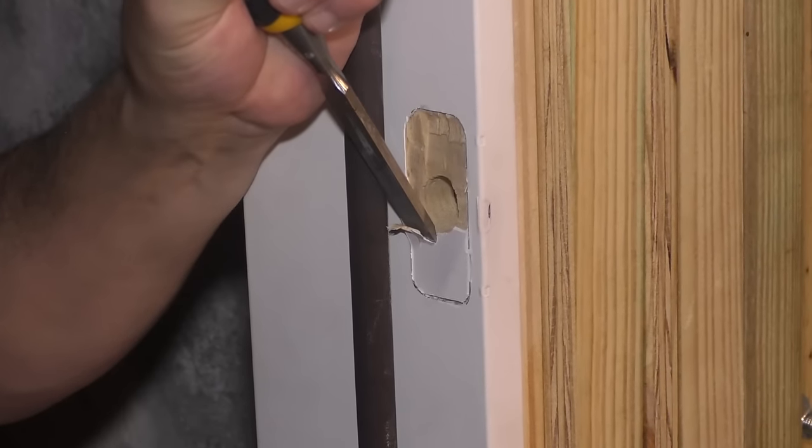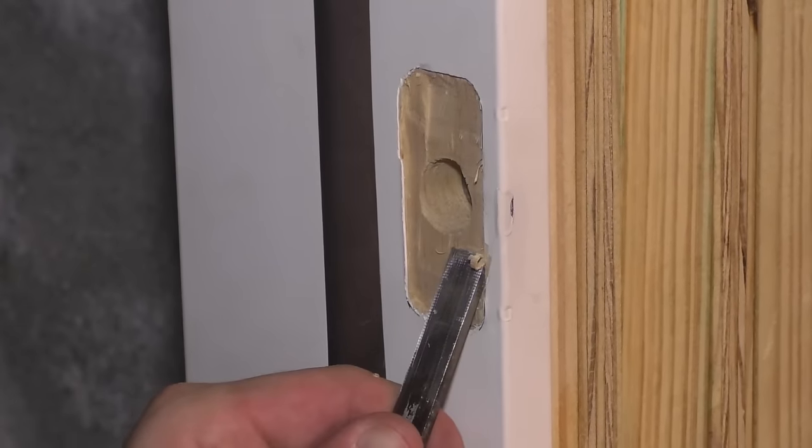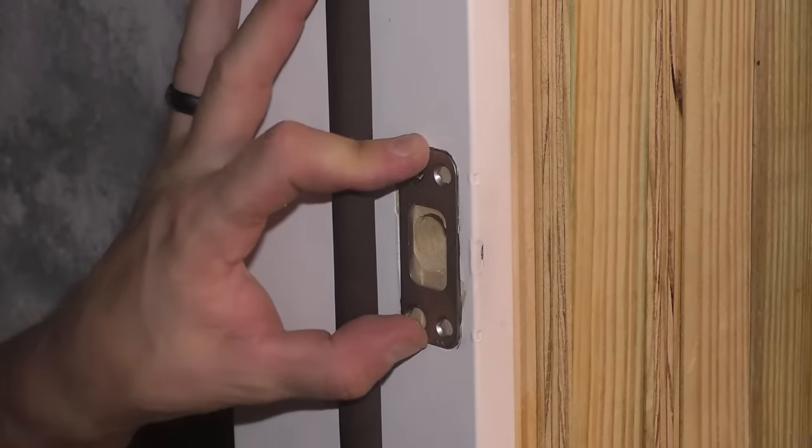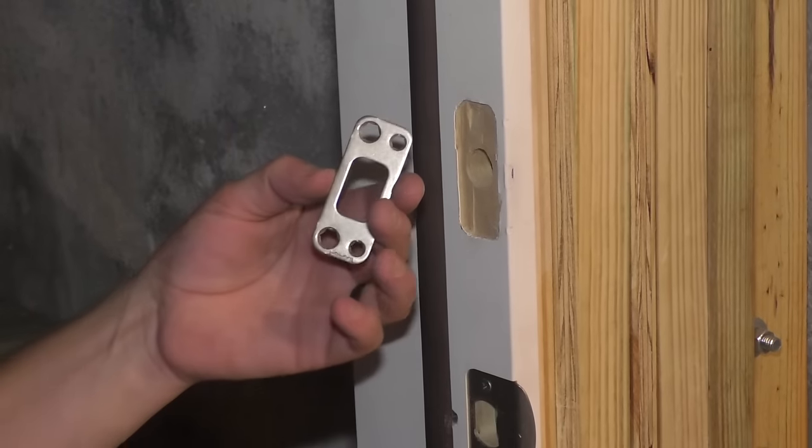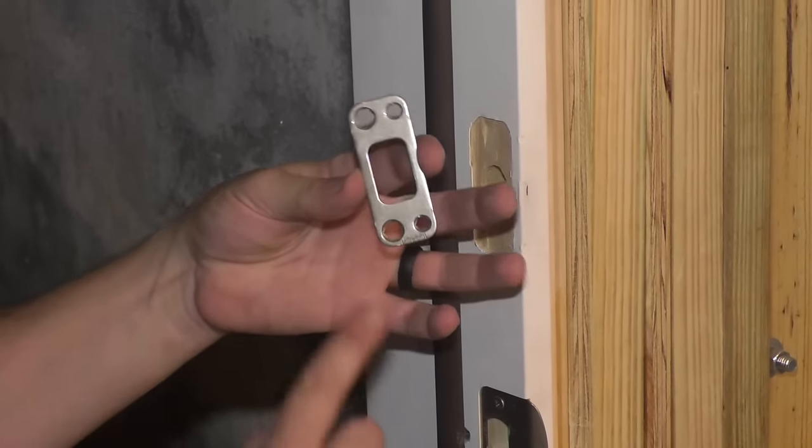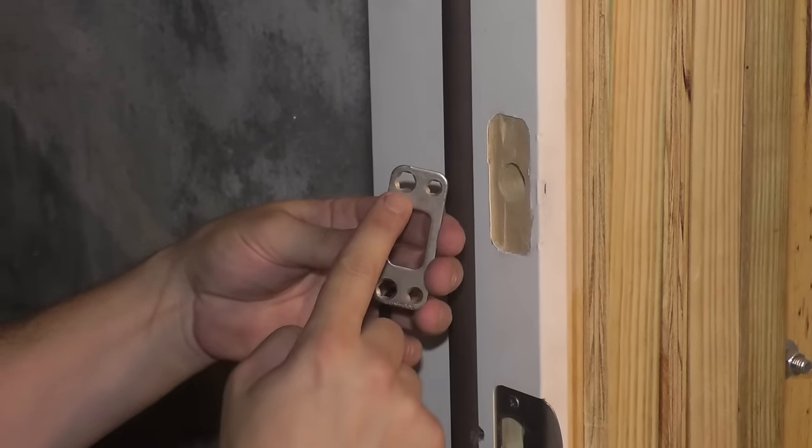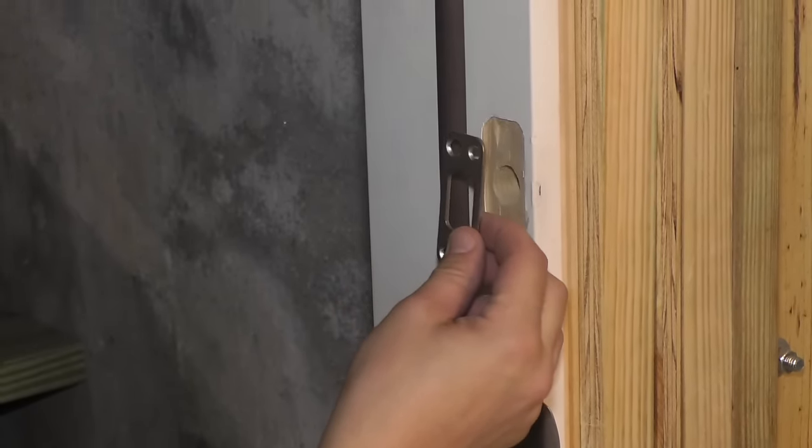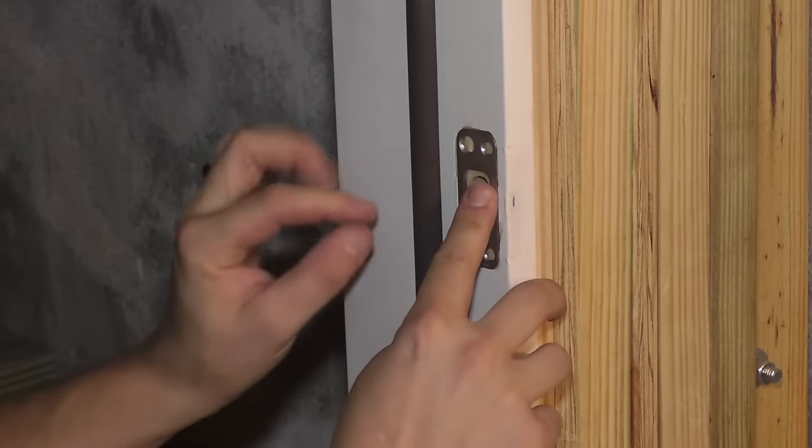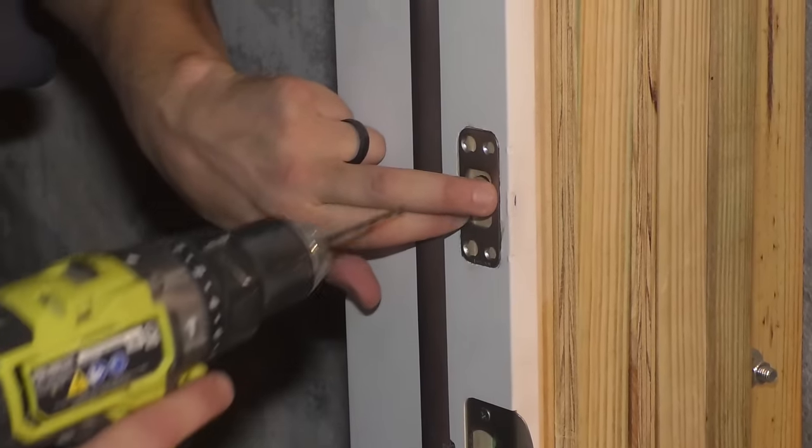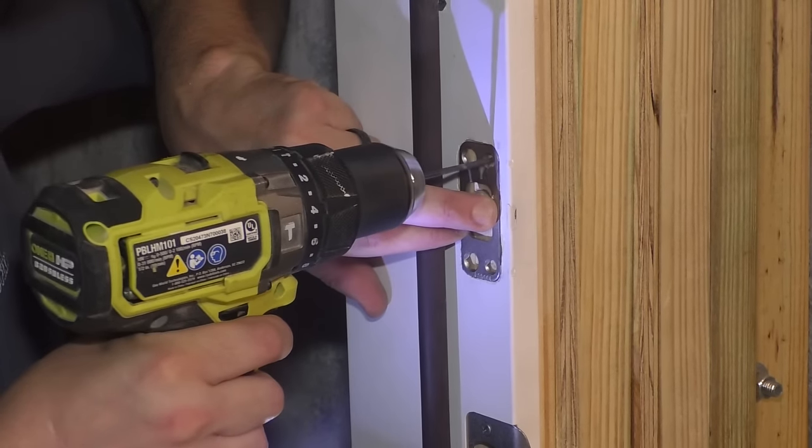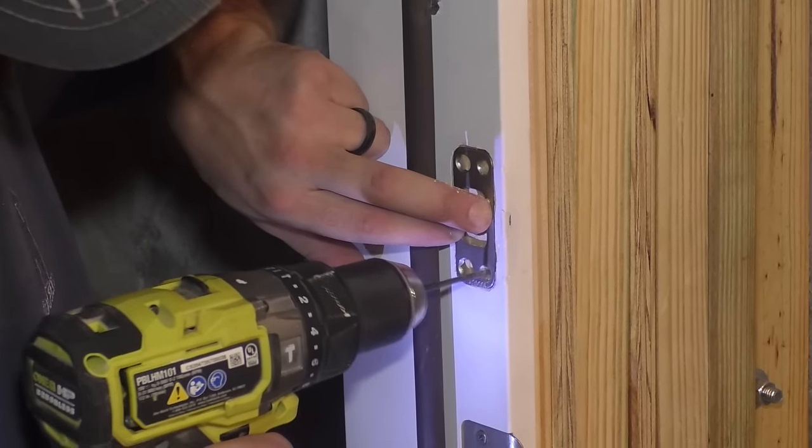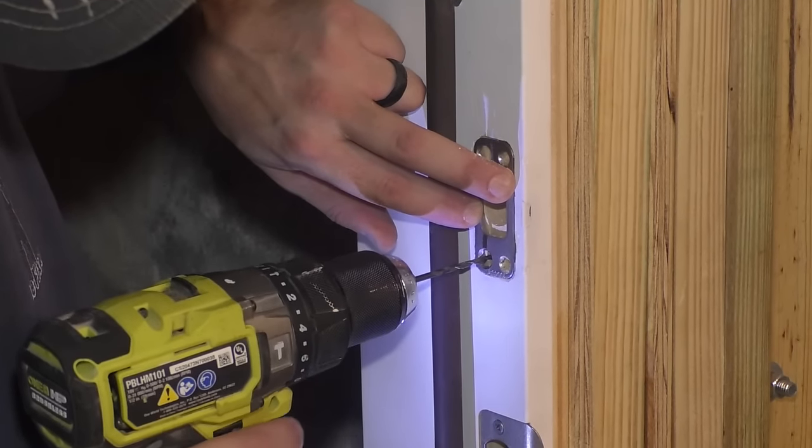I think that's going to work pretty good. I'm going to put the strike plate so that these bigger holes are further this way. That's where these really long screws are going to go in to catch a bunch of the framing to make this more secure. But I am going to pre-drill all four of these. These ones, I'm just going to get through the door jamb or door frame. And then these big ones, I'm going to go as far as I can go.